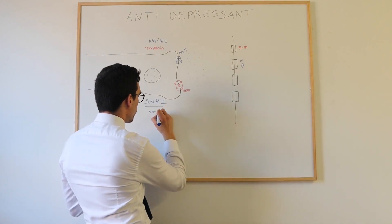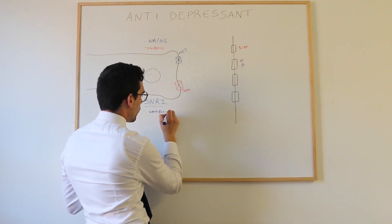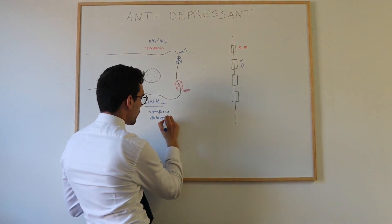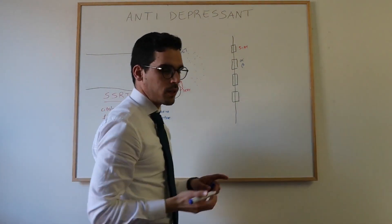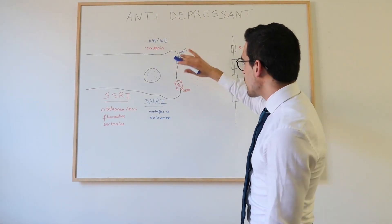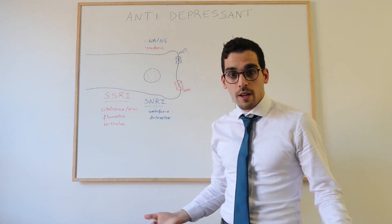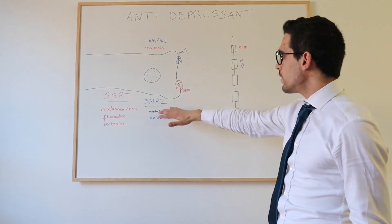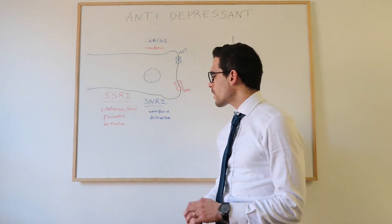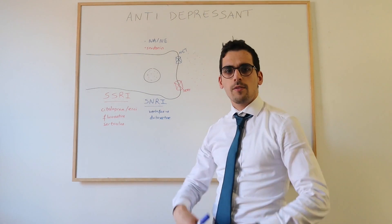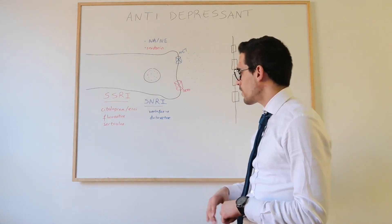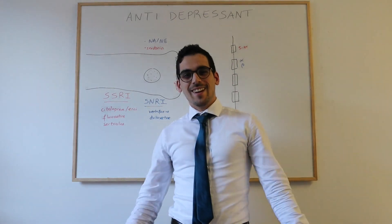Examples of SNRIs are venlafaxine and duloxetine, the most commonly used ones due to their noradrenergic activity. Because of this noradrenergic activity, venlafaxine and duloxetine can sometimes also be used for pain and fibromyalgia, giving them additional indications.